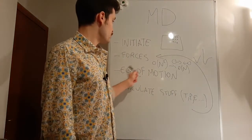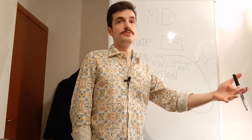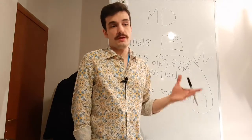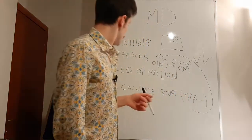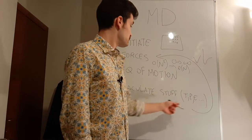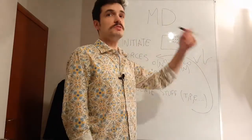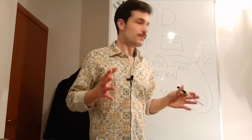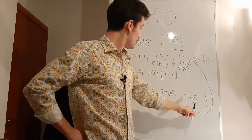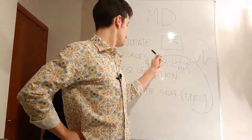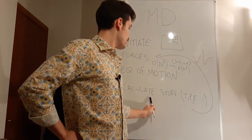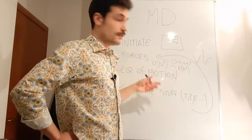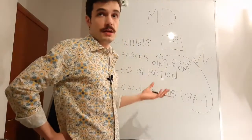Then, once you have the forces, we solve the equations of motion, finding the positions and usually also the velocities — in order to know the kinetic energy and verify we are conserving energy when we should be. Then we calculate whatever we're interested in: temperature, pressure, energy, correlation functions, radial distributions — whatever you want — for that step. Then we recalculate the forces, move the particles, and calculate whatever we want again, in a loop, until the end of the program.